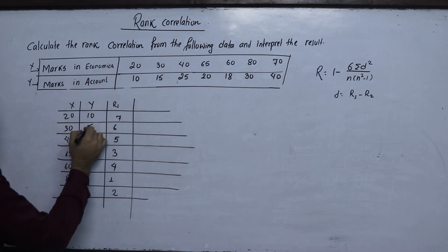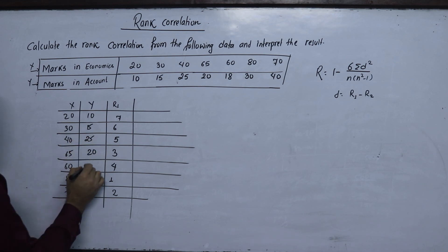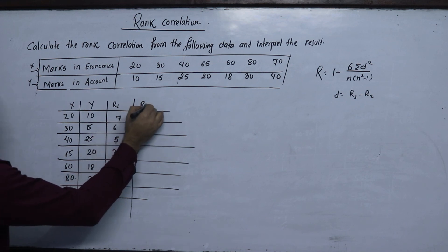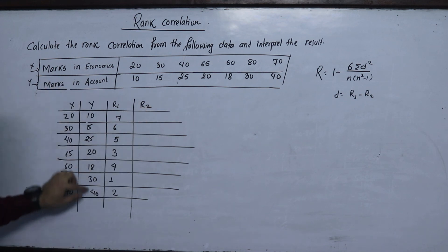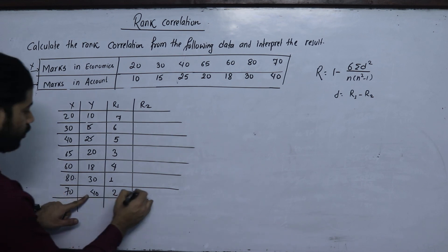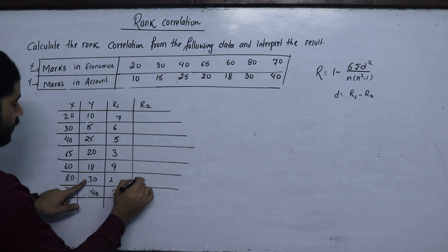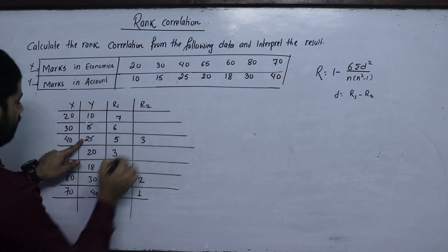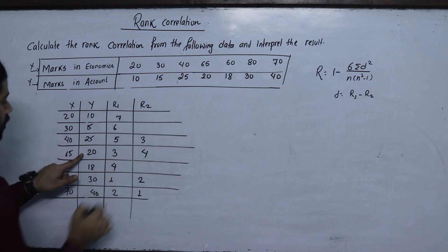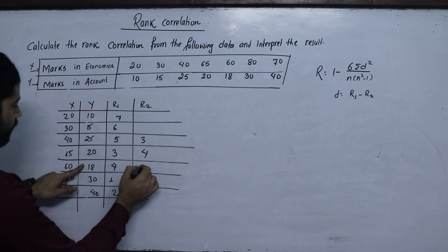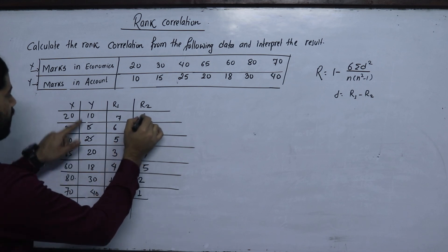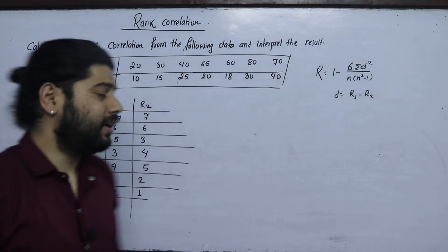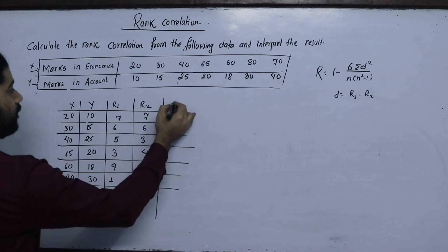The Y marks are: 10, 15, 25, 20, 18, 30, 40. The corresponding Y rankings are: 7, 8, 9, 8, 10, 10, 9. The first step is now complete — we change these to first, second, third, fourth order, which gives us D.